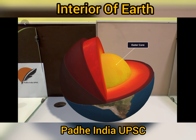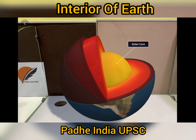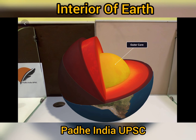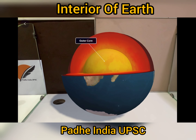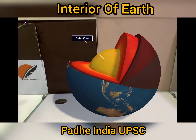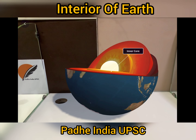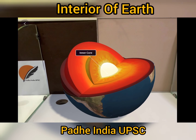Inside the lower mantle there is the outer core — you can see it in the yellow portion, this is the outer core. And this is the white portion, you can see this is the inner core.